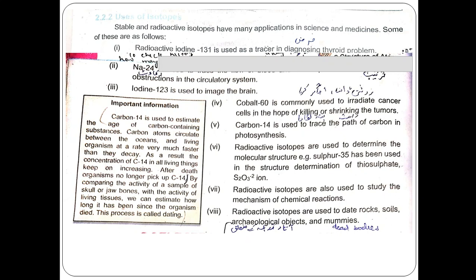Radioactive isotopes are used to determine the age of dead rocks, soils, archaeological objects, and mammals. For ancient or old objects — dead bodies, dead plants, and dead animals — radioactive isotopes can be used to find out their age. This process is called dating.